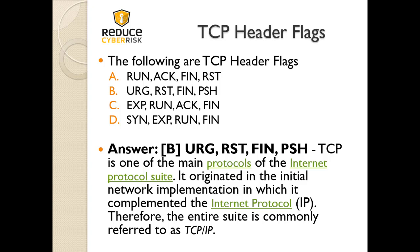Looking at the options again: B is Urgent, Reset, FIN, PUSH. C is Expedite, Run, ACK, FIN. D is SYN, Expedite, Run, FIN. Option D includes SYN along with terms that aren't standard TCP header flags, so that one can be ruled out.